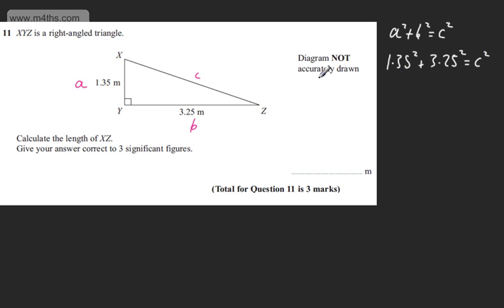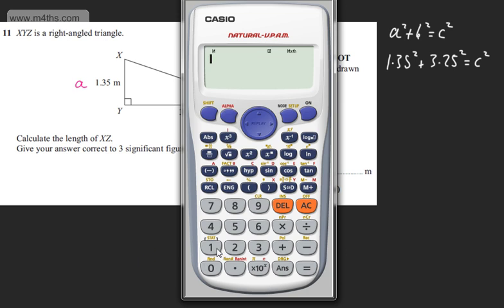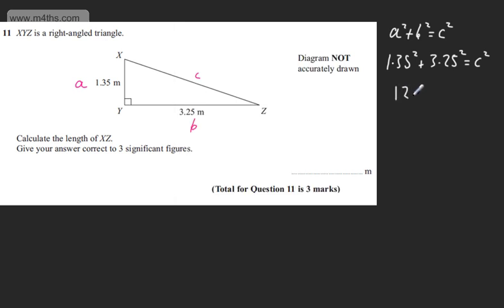All I'm going to do is add these together. So we're going to have 1.35 squared plus 3.25 squared, and that is going to give me 12.385. So we can say 12.385 is equal to C squared.